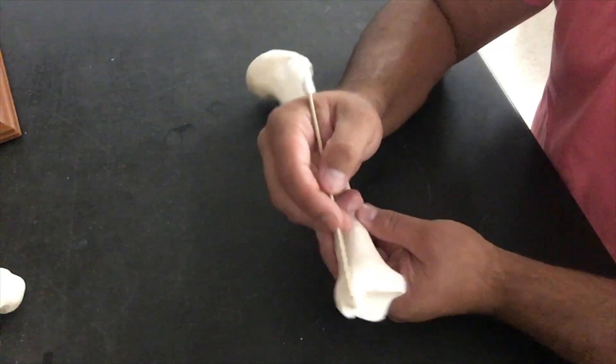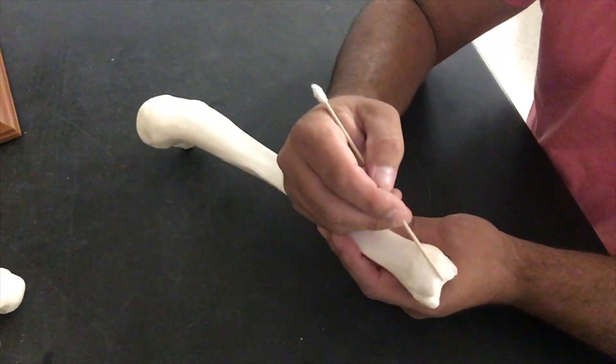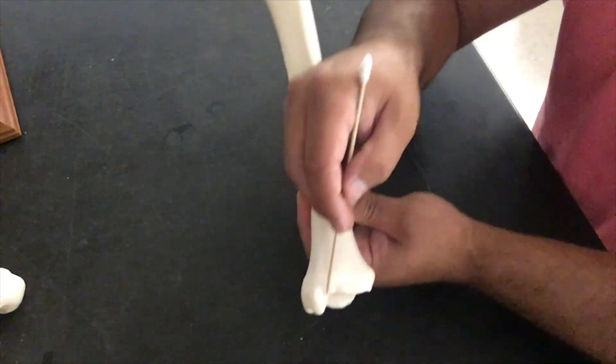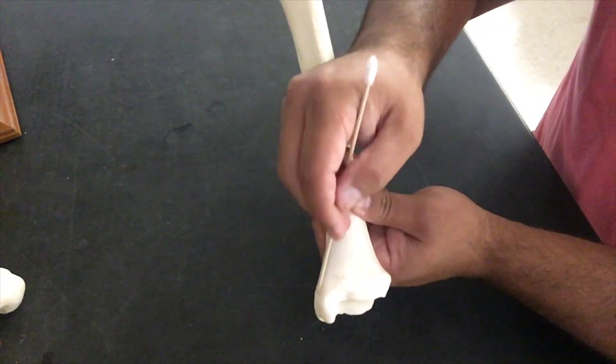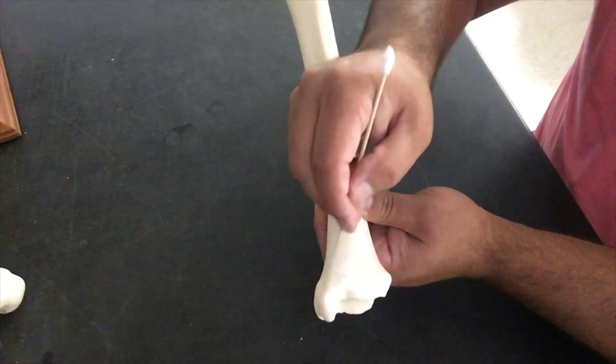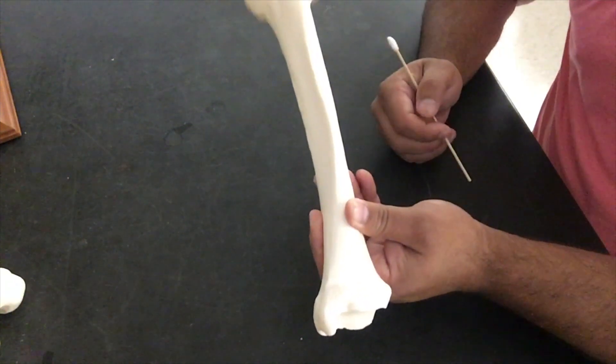Again, we have our little downward bulge here that is going to form our medial malleolus. And if you feel down on the inside most aspect of your ankle, you can feel this big bulge.